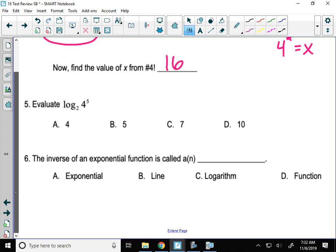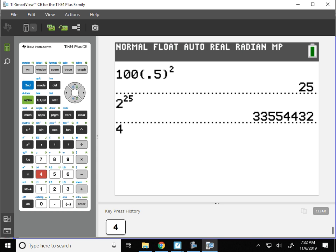Alright, number 5, evaluate the log base 2 of 4 to the 5th. Now imagine that this is set equal to x right here. We don't know what the value equals. Do the same thing that you did in number 4. Use your definition of a log to rewrite this as 2 to what power gives me 4 to the 5th. And then you can simplify. Figure out what 4 to the 5th is.